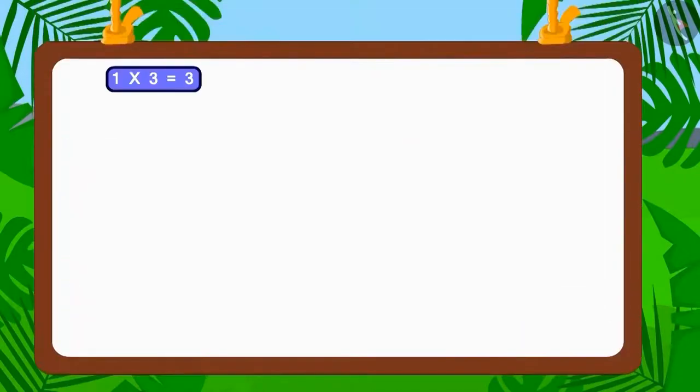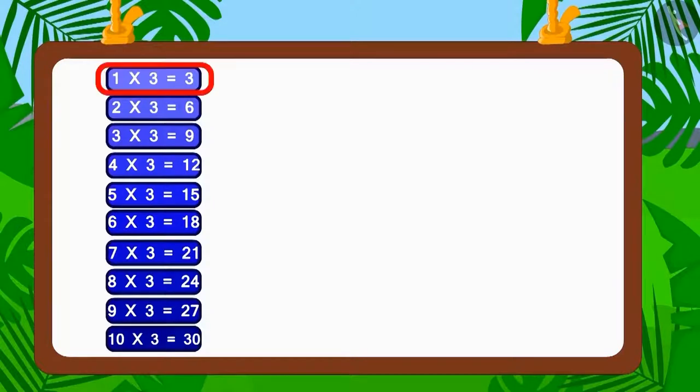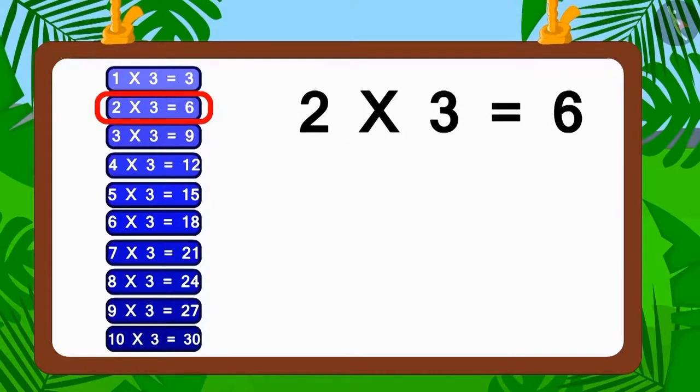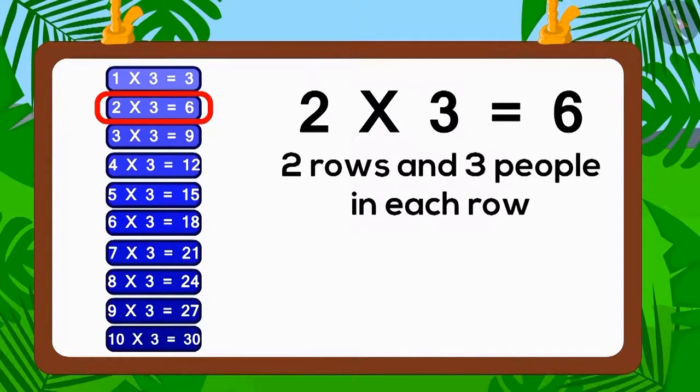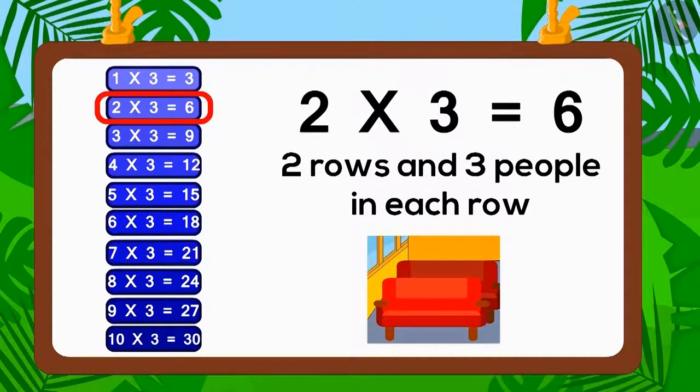Now, let's look at the table of three. Does the number six appear in the table of three? Two multiplied by three is six. Therefore, three is the factor of six. So, if three people sit in each of two rows, how many people in total would be sitting on the bus? Six.